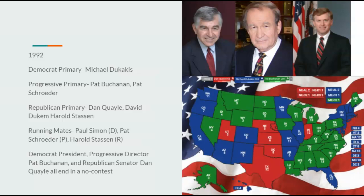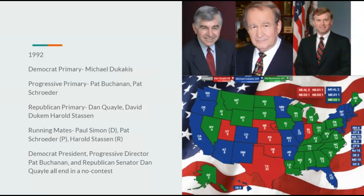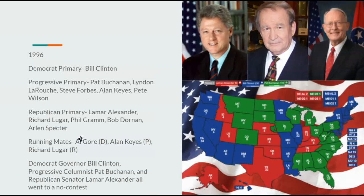Going on to 1992, Democrats renominate Dukakis, Progressives nominate Pat Buchanan, and Republicans nominate Dan Quayle — which historians will say was a bad choice. Running mates: Democrat Paul Simon, Progressive Pat Schroeder, Republican Harold Stassen. Dukakis, Buchanan, and Quayle all go to a no contest, and the House — for the third time — selects Michael Dukakis, as he actually won the popular vote.